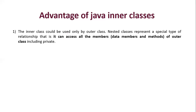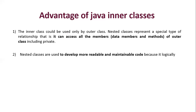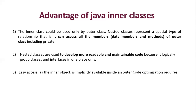The advantages of using inner classes: a nested class can access all members — including private data members and methods — of the outer class. Nested classes are used to develop more readable and maintainable code because they logically group classes and interfaces in one place. They provide easy access as the inner object is implicitly available inside the outer code, optimizing code and requiring less code to write, avoiding the need for a separate class.